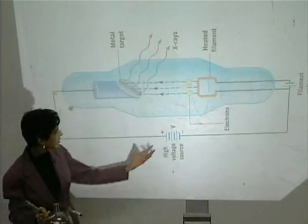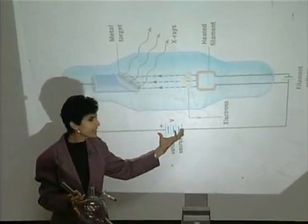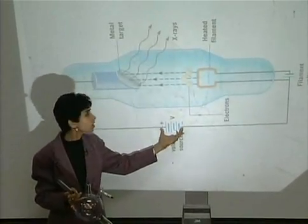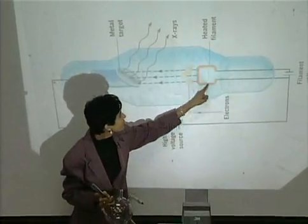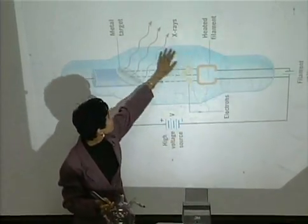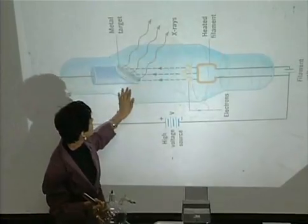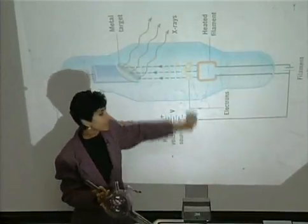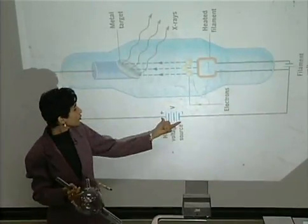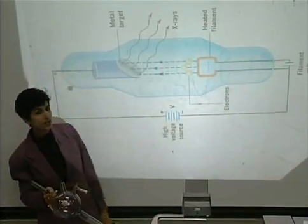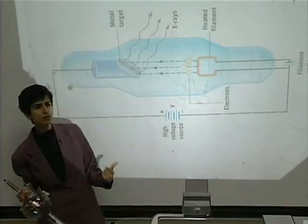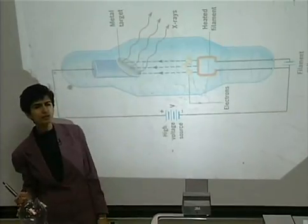What do you think will happen if I have a very, very high voltage? Notice that there is this filament here and this vacuum in between — in this region there's just vacuum. If you close this circuit, as soon as you close the switch, what do you expect will happen?